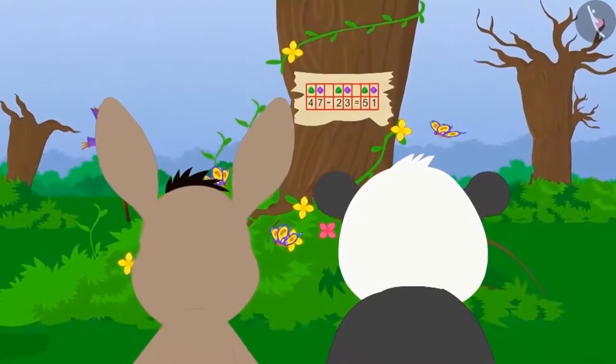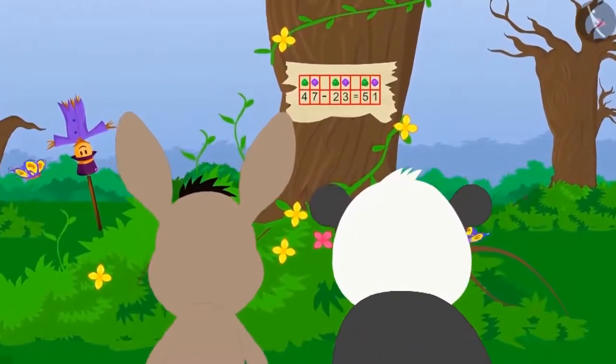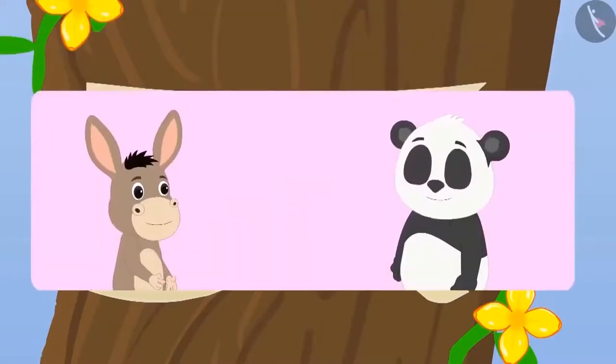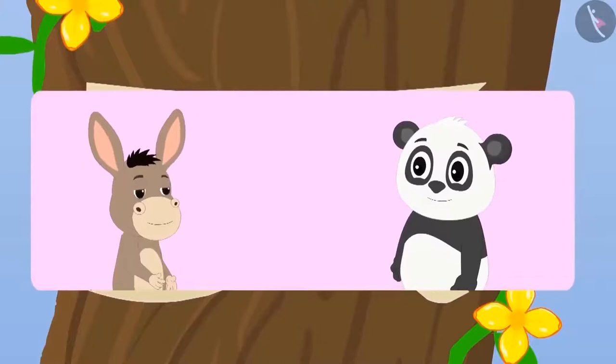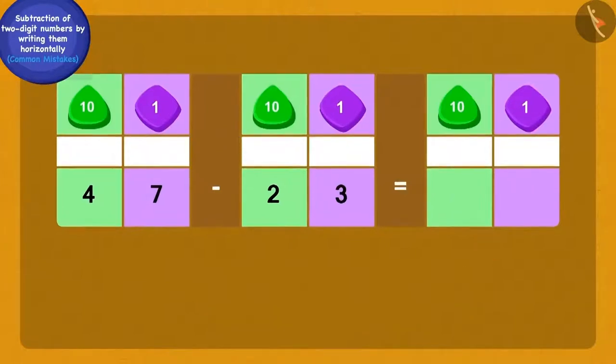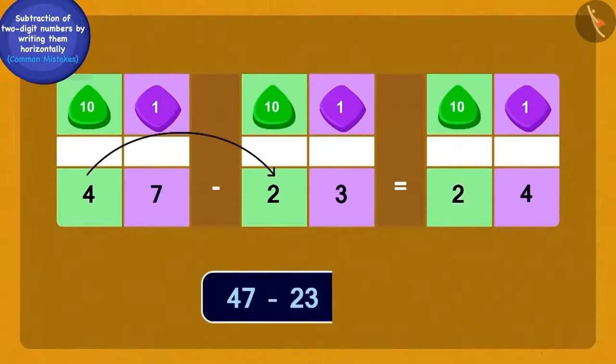They saw this subtraction written on a tree. Children, is this subtraction correct? You guessed it right! This subtraction is incorrect. Will Bola and Golupanda be able to solve this correctly? Let us see. Bola observed that in this subtraction, three ones of 23 were being subtracted from four tens of 47. Another mistake has been made by subtracting the two tens of 23 from the seven ones of 47. Now, Bola erased this wrong answer and subtracted the three ones of 23 from the seven ones of 47. Then, after subtracting two tens from four tens, he wrote the answer as 24.